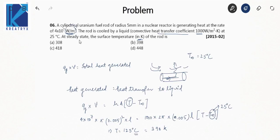Be careful — sometimes options include 125 as a trap answer, but the question asks for Kelvin. If you don't notice the required units you will lose marks. The correct answer is 398 K.